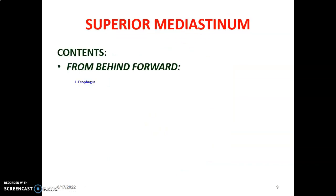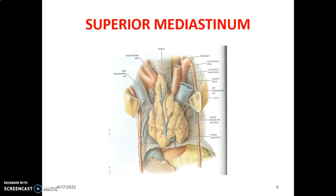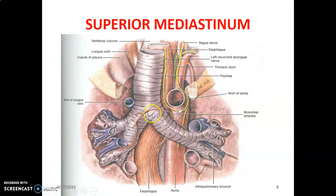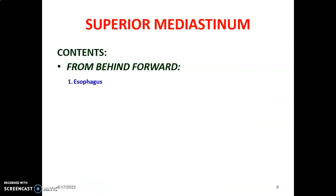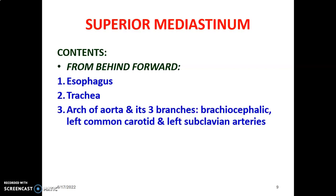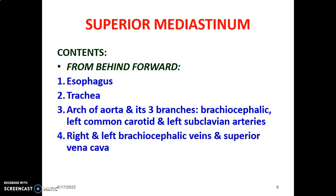The contents of the superior mediastinum include the esophagus, the trachea — which bifurcates at the sternal angle of Louis — and the recurrent laryngeal nerve between the trachea and esophagus. The aorta and its three branches include the brachiocephalic trunk, left common carotid artery, and left subclavian artery in that order. You also have the right and left brachiocephalic veins that join to form the superior vena cava, and the thymus gland.